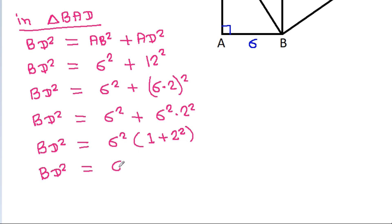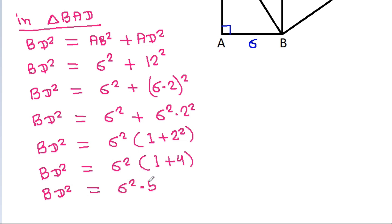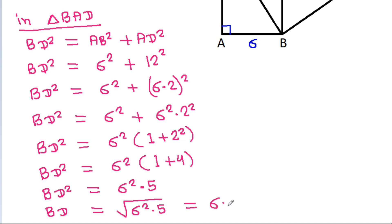BD² is equal to 6² times (1 plus 4), so BD² equals 6² times 5. Therefore BD equals the square root of 6² times 5, which is 6√5.